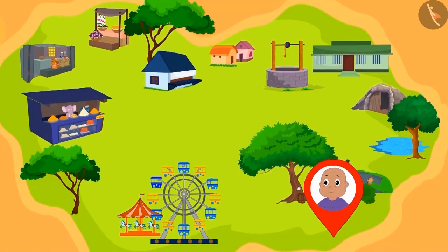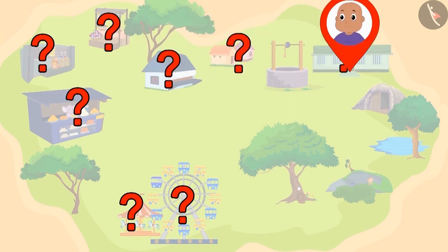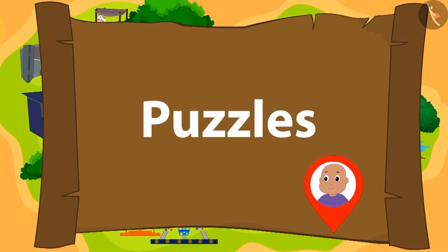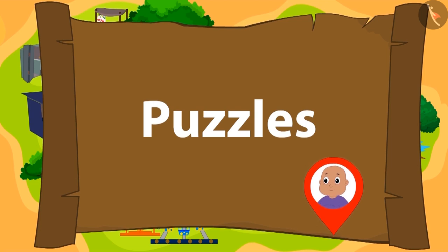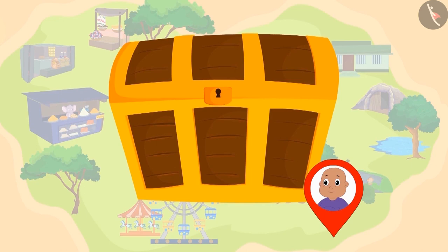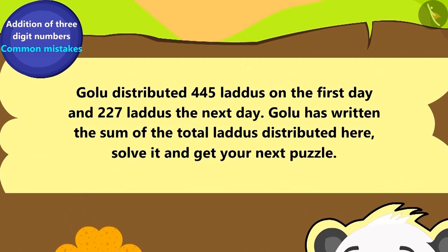Raju and Bablu are playing a unique game. Raju has hidden some puzzles for Bablu in the village. After solving each puzzle correctly, Bablu will reach the location of the next puzzle. Once all the puzzles are solved, Bablu will find Raju's hidden object.